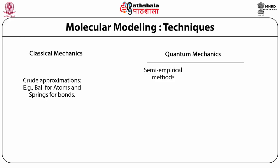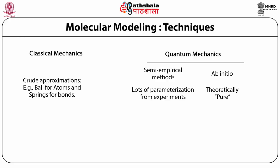Quantum mechanical methods can be broadly divided into two groups: the so-called semi-empirical methods and the so-called ab initio methods. In the case of semi-empirical methods, the calculations involve a lot of parameterizations and the parameters are taken from experimental data. The ab initio methods on the other hand are theoretically pure in the sense that very little help is taken from experimental measurements.